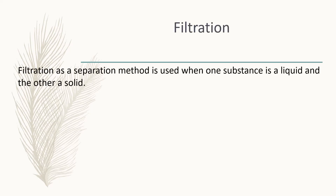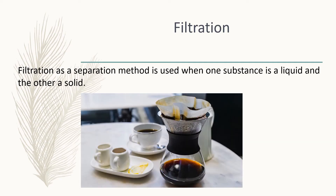Our next method of physical separation is filtration. Filtration as a separation method is used when one substance is a liquid and the other substance is a solid. The liquid mixture is poured into the filter to allow the liquid to run through while the solid stays behind, because the holes in the filter are too small for it to pass through. Can you think of an example? Yes, something we all like — coffee. Coffee is a good example of filtration.